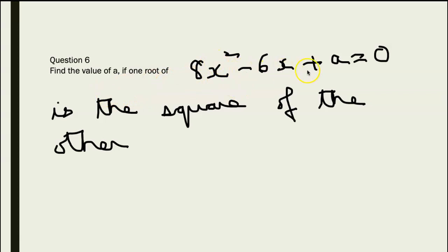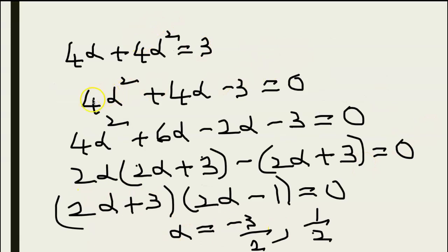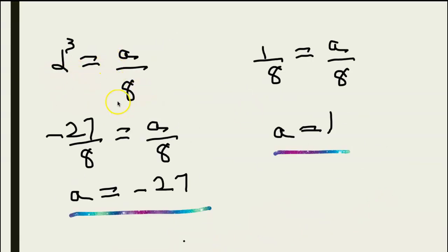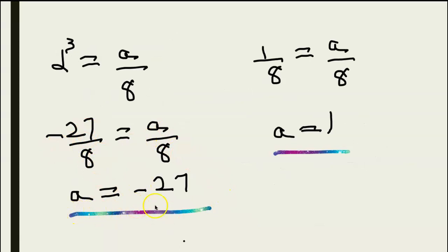Find the value of a if one root of 8x² - 6x + a = 0 is the square of the other. Let the roots be alpha and alpha². So alpha + alpha² = 6/8 = 3/4, and alpha × alpha² = a/8. From the sum: 4alpha(1 + alpha) = 3, giving 4alpha² + 4alpha - 3 = 0. Factorizing: (2alpha+3)(2alpha-1) = 0, so alpha = -3/2 or alpha = 1/2. Since alpha³ = a/8: if alpha = 1/2, a = 1; if alpha = -3/2, a = -27.